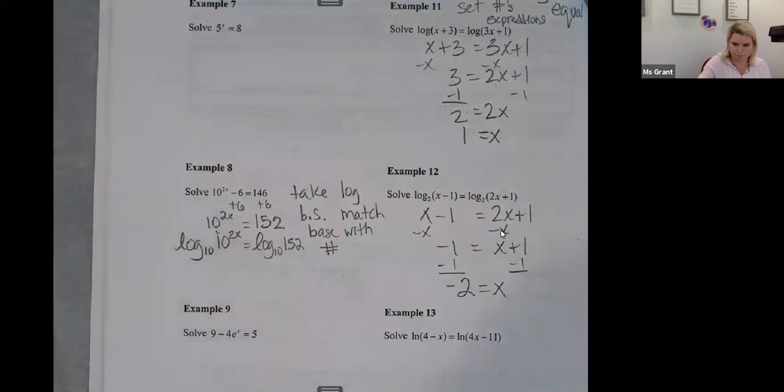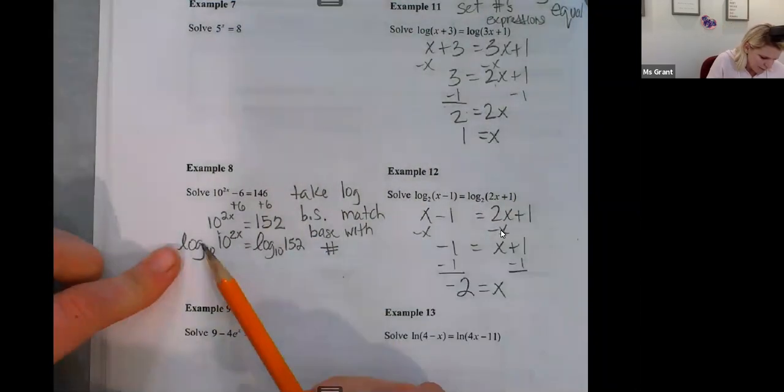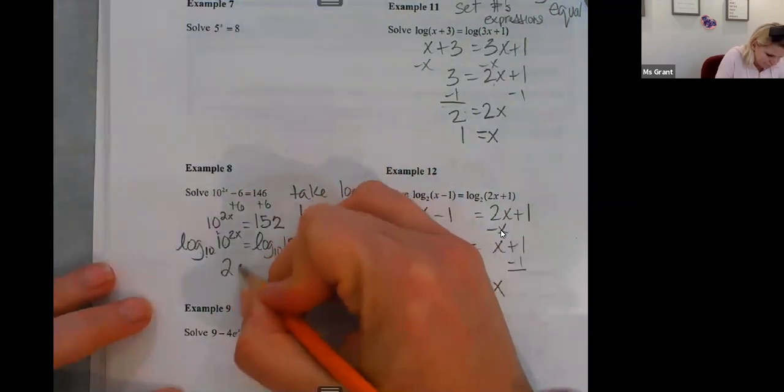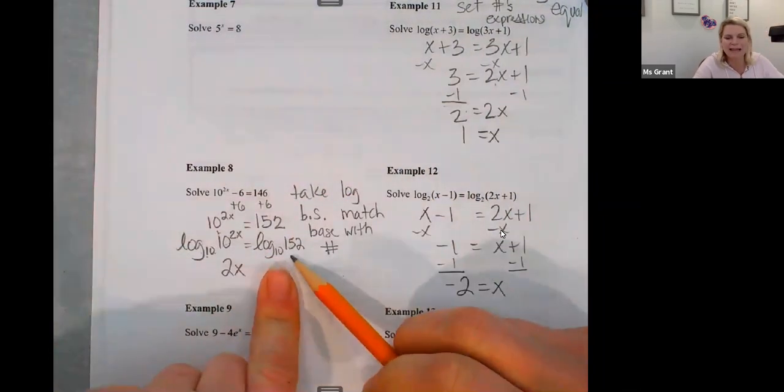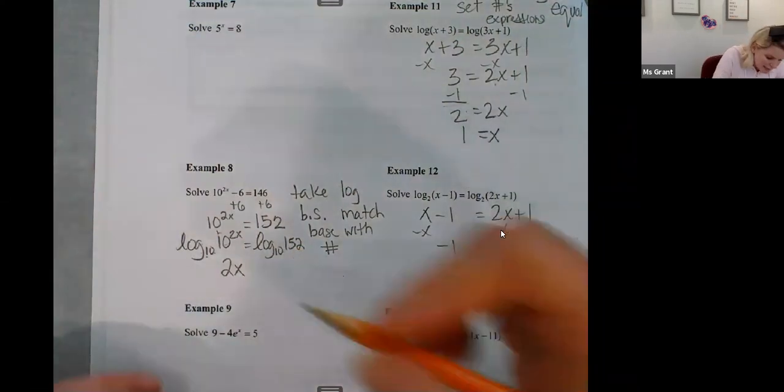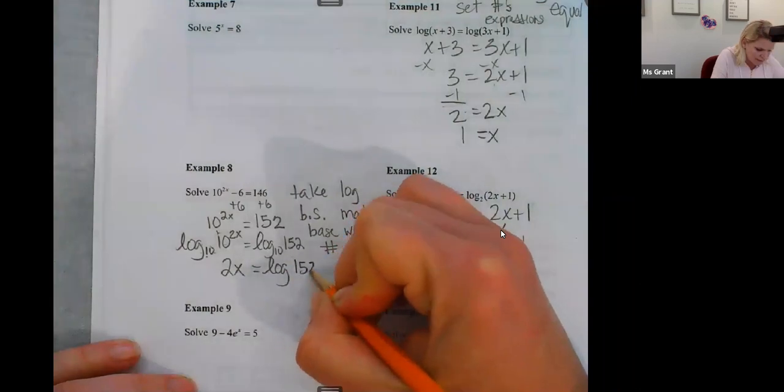And the reason I picked log base 10 is because this 10 right here is there. Okay. Now, there's the rule. So if the base matches the number, then I can cancel it out, which means I'm just going to have a 2x on this side. But however, nothing cancels out here. This 10 doesn't match up with this 152. So I keep the actual log at 152 on this side.